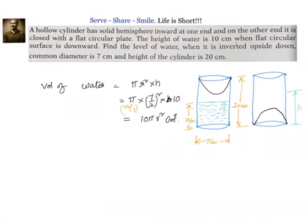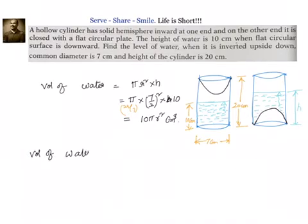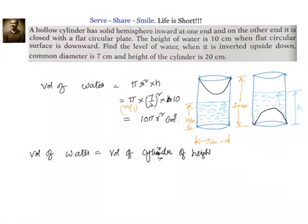Now, when it is inverted upside down, what will be the volume of water? The water volume will remain the same, but the height will change because there is an inward hemisphere which will cause the height to be more. So, the logic we have to apply is: volume of water will remain the same, and that equals the volume of the cylinder of height h minus the volume of the hemisphere.